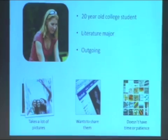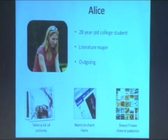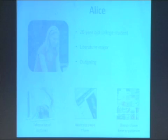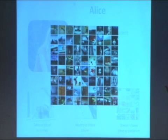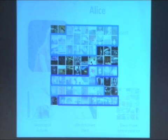Let's take a look at who our user is. Our user is Alice. She's a 20-year-old college student studying literature at BU. She's outgoing and she loves to take pictures on her phone. Alice's problem is that all her pictures get added to a single list on her phone. So if she were to take 50 pictures corresponding to four different events and she only wanted to publish one of these events, she would have to go through and handpick the ones she wanted to publish. She has neither the time nor the patience to do this very often, so she usually just doesn't bother.